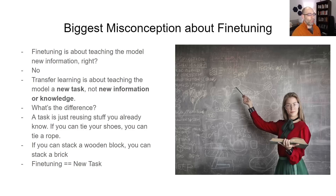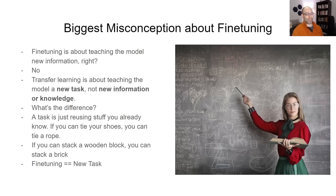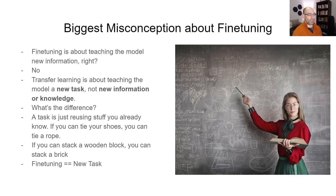Another problem is that fine-tuning does not overrule confabulation or hallucination — it's the same thing. Think of it like this: if you learn to tie your shoes, you can tie pretty much any string. That is an example of transfer learning. You're not learning any fundamentally new physics or anything different with your hands — you're just saying, I can tie my shoes, now I can tie a string. Or if you can stack a wooden block, then you can also stack bricks. That is transfer learning — you take something you've already learned to do and apply it to a slightly different task. So fine-tuning is just new tasks. It's not new information, not new knowledge — just a new task.